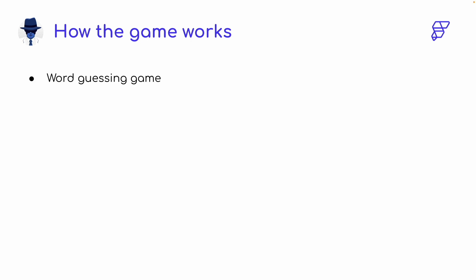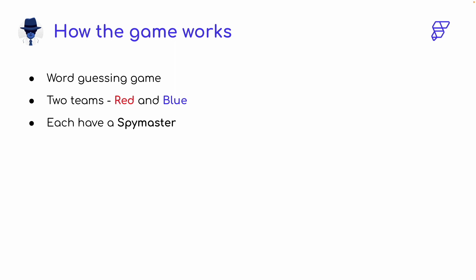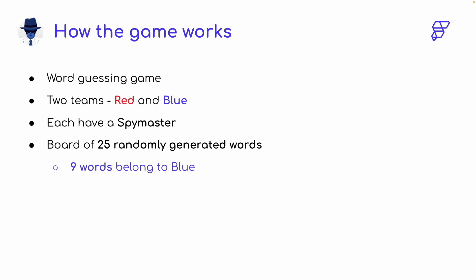To put it simply, it's a word guessing game. There would be two teams — red and blue — and each team will have a spy master. The main role of the spy master is to give out clues. Players will be presented with a board of 25 words. Nine of these belong to the blue team and eight belong to the red. Blue has more words to guess because they get the first chance to start. The remaining ones are neutral and don't belong to any team.